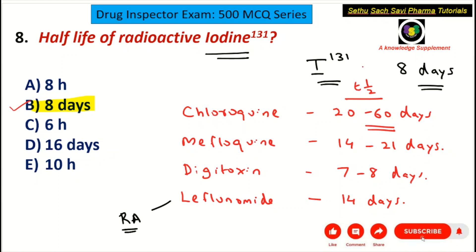To summarize: iodine-131 has a half-life of 8 days; chloroquine up to 60 days; mefloquine 14 to 21 days; digitoxin 7 to 8 days; leflunomide 14 days. The correct answer for this question is B: 8 days for iodine-131.